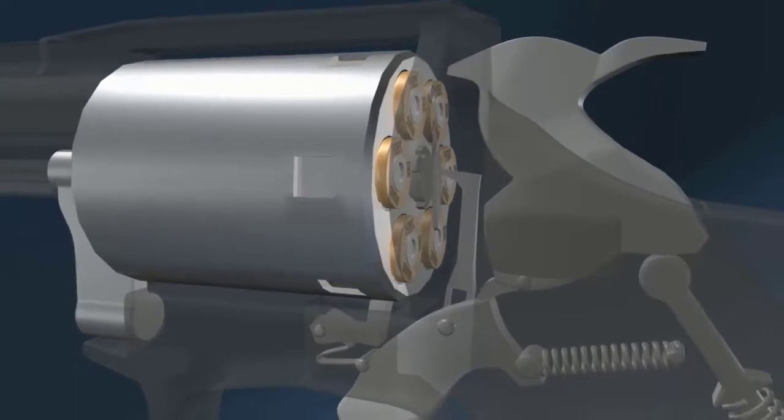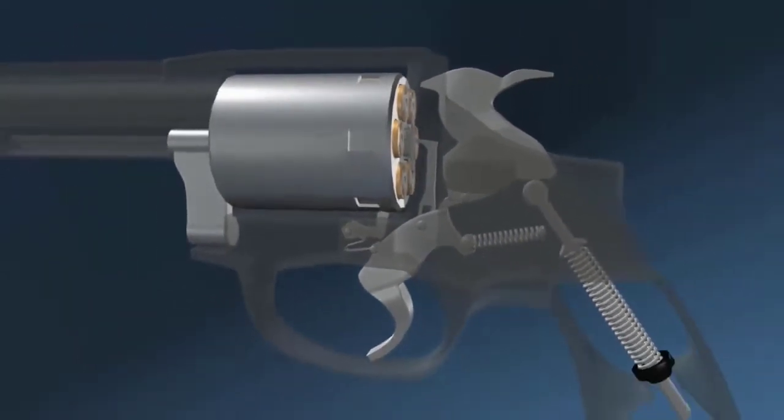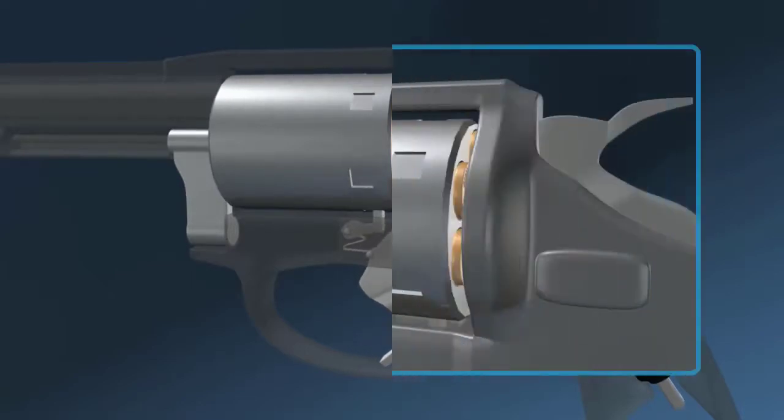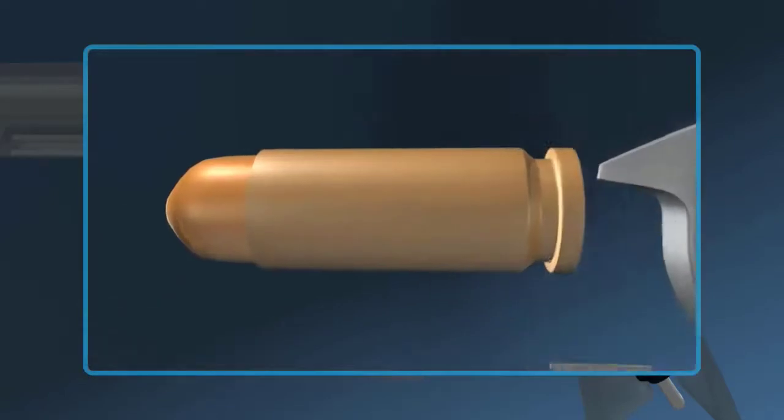When the trigger lever is pushed all the way back, it releases the hammer. The compressed spring drives the hammer forward. The firing pin on the hammer extends through the body of the gun and hits the primer.